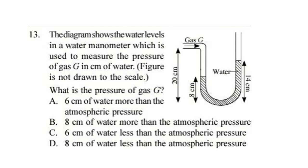Question 13. The diagram shows the water levels in a water manometer which is used to measure the pressure of gas G in centimeter of water. Figure is not drawn to the scale. What is the pressure of gas G? Look at the figure carefully. Read the statements. Try to find out your answer. Correct answer is option A. 6 centimeter of water more than the atmospheric pressure.